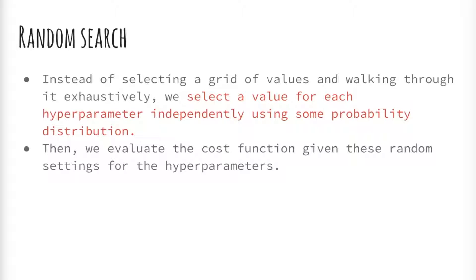Random search is a slight variation on grid search. Instead of searching over the entire grid, random search only evaluates a random sample of points on the grid. This makes random search a lot cheaper than grid search.